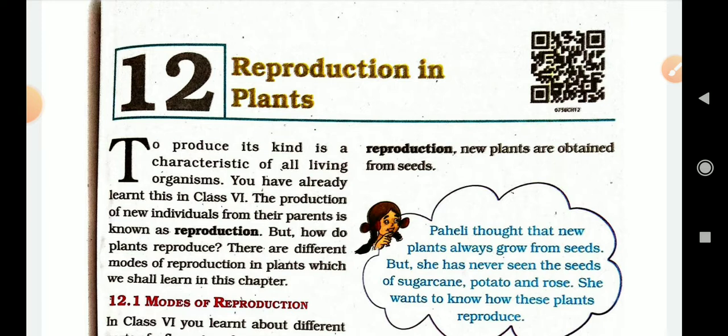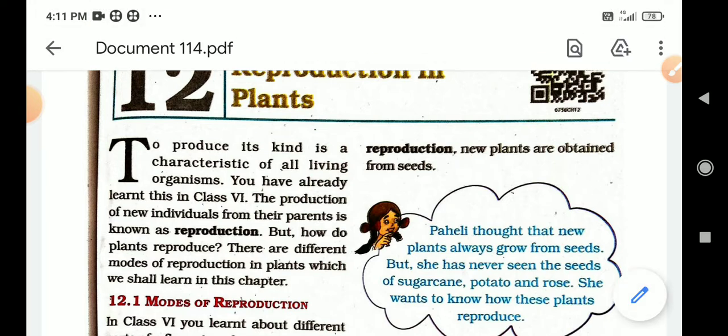To produce its kind is a characteristic of all living organisms — jem animal, birds ma reproduction system chhe, tevi j reet e plants ni andar pan reproduction system chhe. You have already learnt this in class 6. The production of new individuals from their parents is known as reproduction.